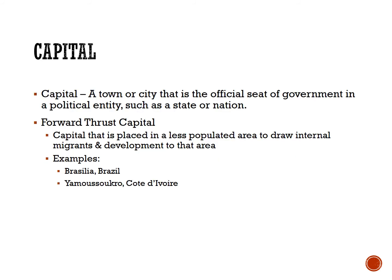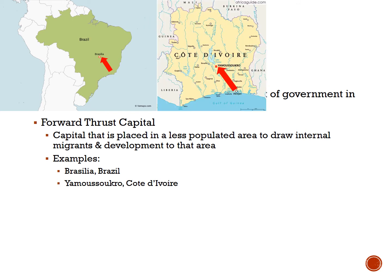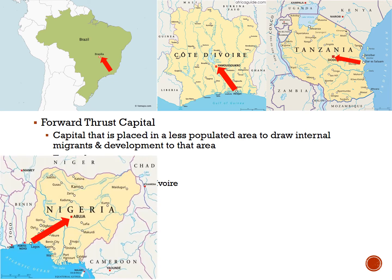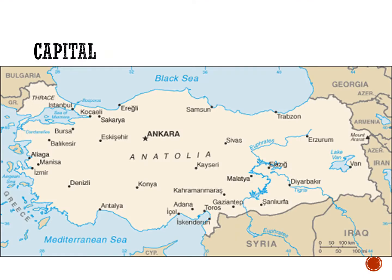Some capitals are intended to encourage people to move toward less populous areas. We call these forward thrust capitals, sometimes just forward capitals. Brazil moved its capital from the colonial capital of Rio de Janeiro on the coast to Brasilia to try and draw people to the interior. We can see this in other former colonies as well, in countries like Cote d'Ivoire, Tanzania, Nigeria, Myanmar, and Pakistan. Other capitals may be established in the most central area of the country, such as when Turkey chose its capital of Ankara instead of the more important and populous city of Istanbul.